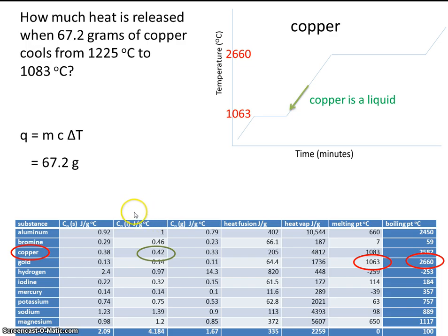And the units are written here. Joules per gram degrees C. So here's C for copper. Now we need the change in temperature for copper.